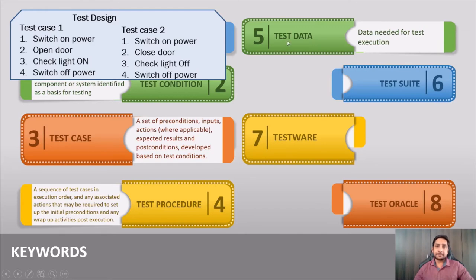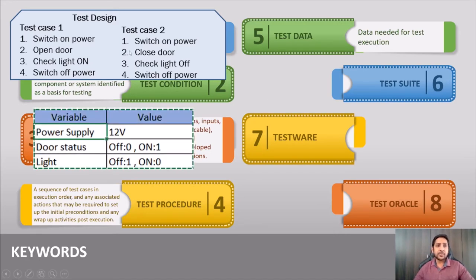Test data is the data needed for test execution. When we want to execute test cases — normally in automation testing — we need specific data. For example, power supply voltage like 12V, and door status values like 0 for closed and 1 for open. These are the data values we need to feed to test cases so they can execute automatically.